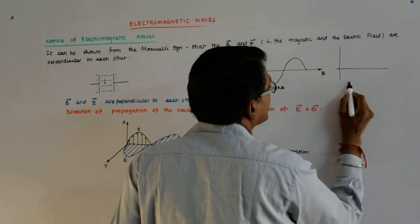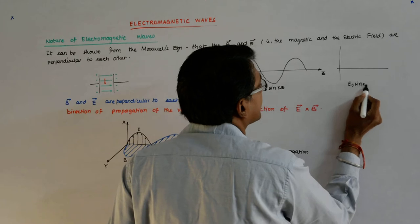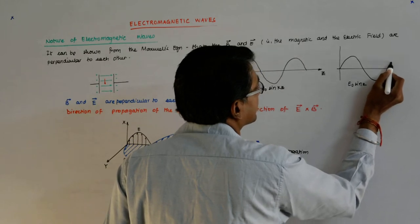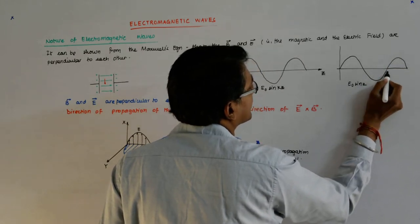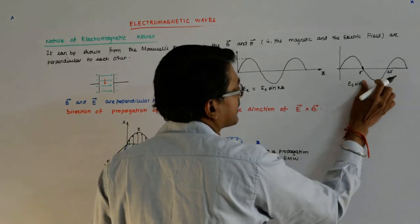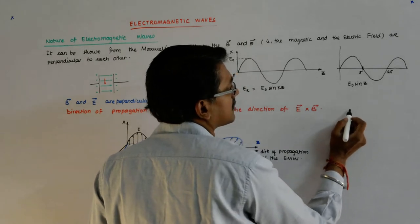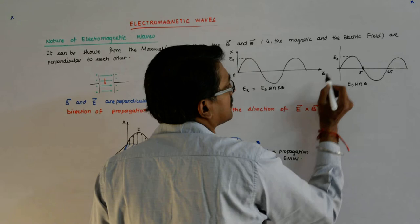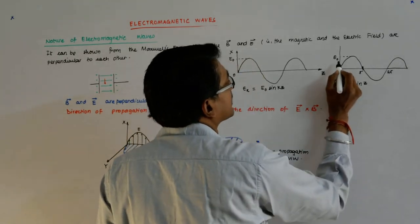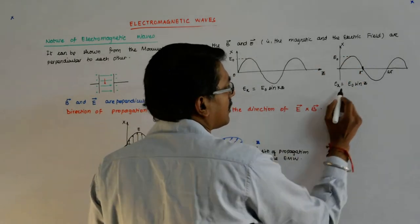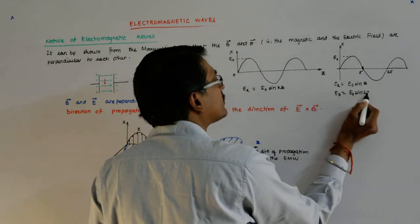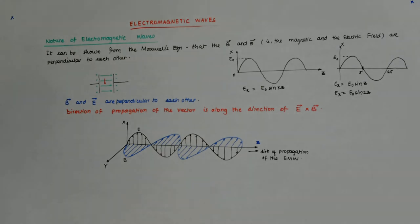Let us draw E naught sine(z). It will look something like that — one cycle, 0 to 2π, this is π. This is E naught sine(z), this is E_x, because E is directed along the x direction.